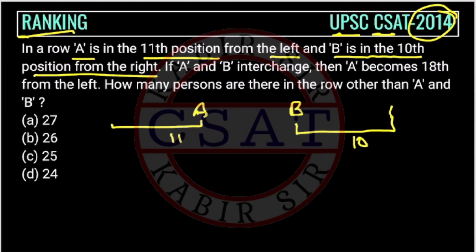If A and B interchange - A and B change their positions, then B comes here and A comes here. Then A becomes 18th from the left.